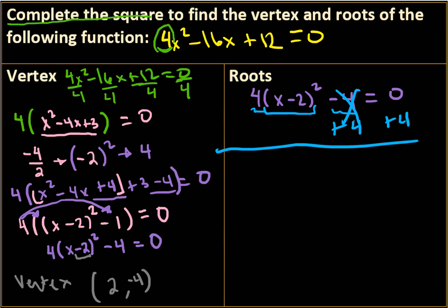These cancel, and I get negative 4 plus 4 is 0, and 0 plus 4 is 4, equals 4 times x minus 2 quantity squared.